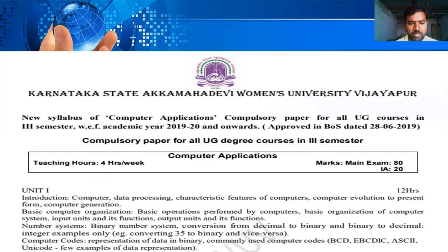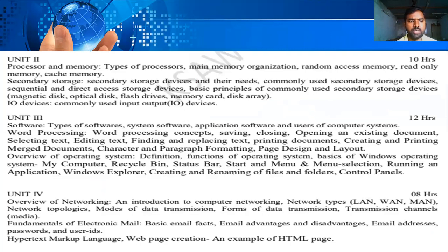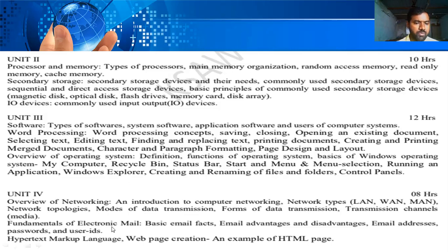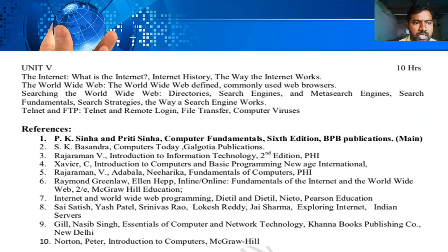The syllabus also includes computer code representations: BCD code, ASCII code, and Unicode. Unit two covers processor memory — secondary and primary storage devices. Unit three covers software and types of software. Unit four covers word processing and an overview of networking. Unit five covers the fundamentals of email, the internet, Telnet, and FTP.